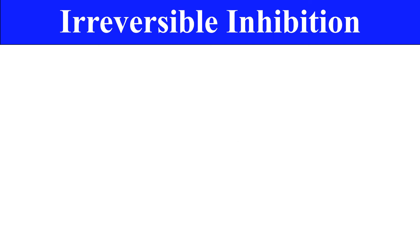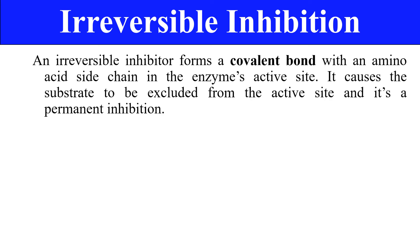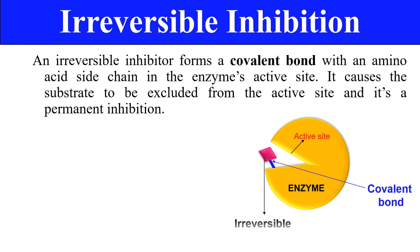The last type is irreversible inhibition. Competitive, non-competitive, and uncompetitive inhibitors are all subtypes of reversible inhibition — if the inhibitor is removed, the enzyme returns to normal function. But in irreversible inhibition, the inhibition is permanent because the inhibitor forms a covalent bond with the amino acid present in the enzyme's active site. Due to this covalent bond, the substrate is unable to bind to the active site. As shown, the irreversible inhibitor binds to the active site forming a covalent bond, making the active site inaccessible to substrate, so no product is formed.